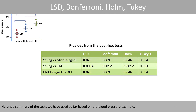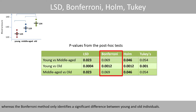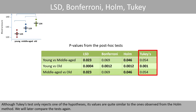Here is a summary of the tests used so far based on the blood pressure example. Both Fischer's LSD method and Holm's method result in p-values less than 0.05, whereas the Bonferroni method only identifies a significant difference between young and old individuals. Although Tukey's test only rejects one of the hypotheses, its values are quite similar to those observed from Holm's method. We'll compare these tests again later.